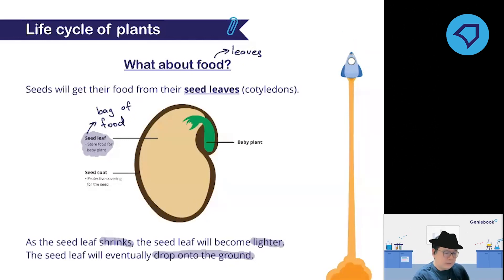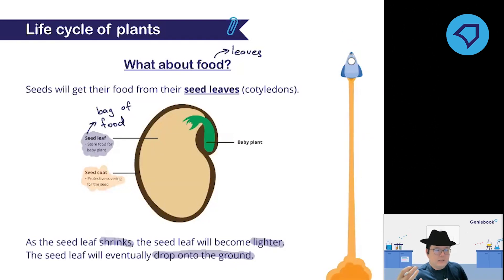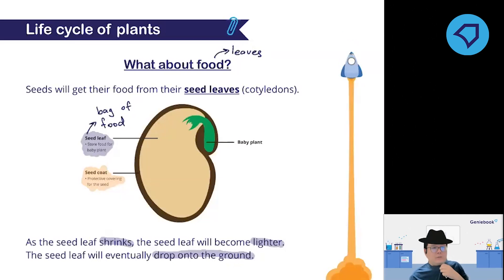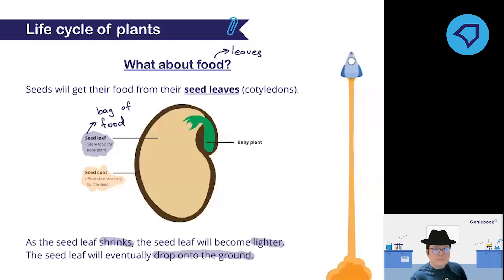There is also something called a seed coat — not crucial, but some schools ask about it. A seed coat is the outer covering of a seed that protects it, just like clothes protect us from heat, cold, or the environment.